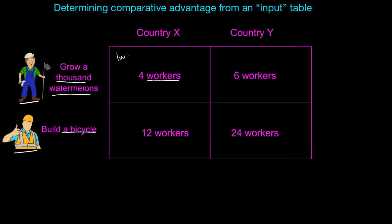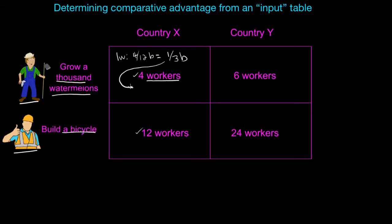Let's start with watermelons in Country X. I find it very helpful to tell a story when calculating opportunity costs using data from an input table. The four workers needed to produce a single watermelon could have produced how many bicycles? Four workers could have only produced four-twelfths of a bicycle because you would have needed three times that many workers in order to produce a single bicycle. That means that per thousand watermelons, this country is giving up only one-third of a bicycle. Converting that to a decimal, the opportunity cost of watermelons is 0.33 bicycles per watermelon.